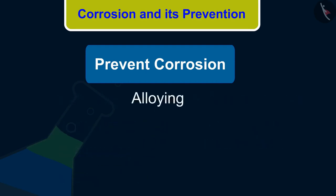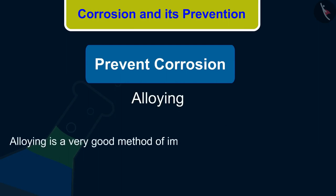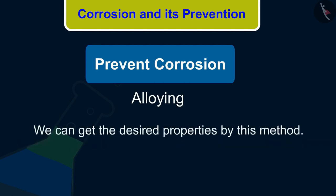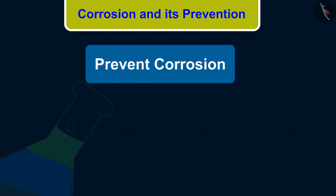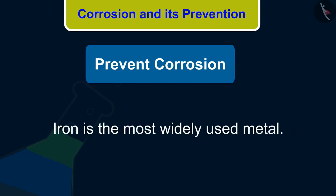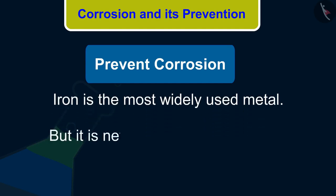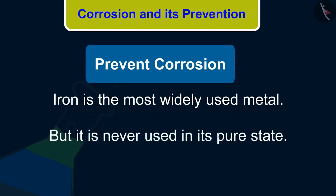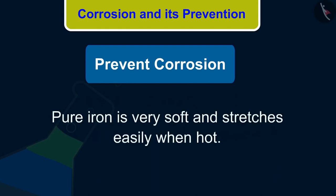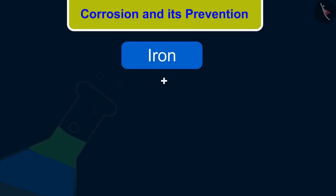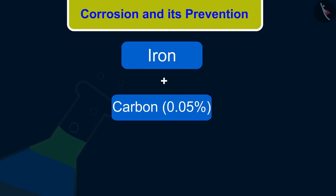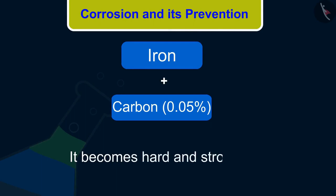What is alloying? Alloying is a very good method of improving the properties of a metal. We can get the desired properties by this method. For example, iron is the most widely used metal, but it is never used in its pure state, because pure iron is very soft and stretches easily when hot. But if it is mixed with a small amount of carbon — about 0.05% — it becomes hard and strong.